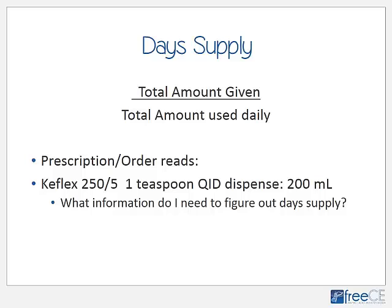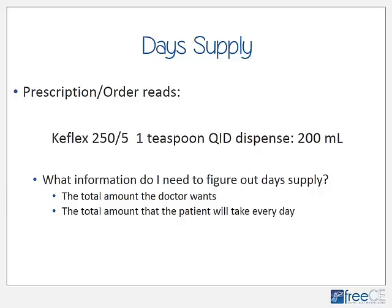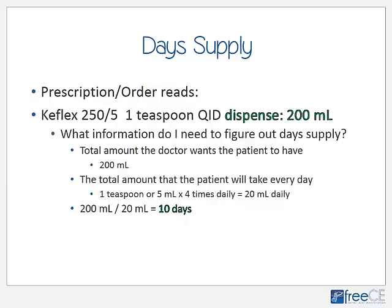Example: Keflex 250 per 5 mL — 1 teaspoon 4 times daily, dispense 200 milliliters. When you enter the prescription, you need a day supply. Using the formula: total amount given divided by total amount used daily. The total amount given is 200 milliliters. From the directions, 1 teaspoon four times a day is 5 mL times 4, or 20 milliliters daily.